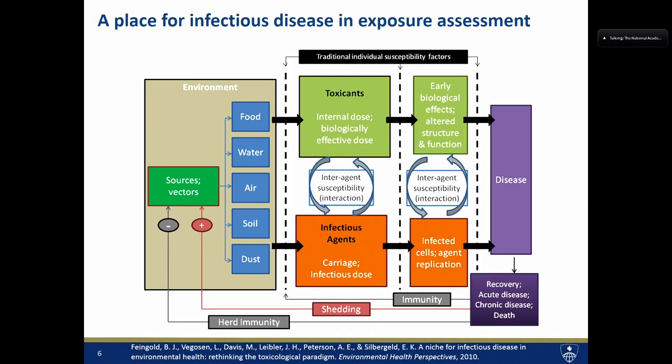We thought a lot about where things come from — what our sources are. With chemical exposures you might think of a smokestack, and with infectious disease agents you might think about a reservoir. These move through environmental media and cause disease through a toxicological mechanism. Infectious diseases may have a parallel pathway, but we also imagined that we might need to think about the synergy — the effect modification — that infectious disease agents might have with chemical toxicants on a shared disease outcome.